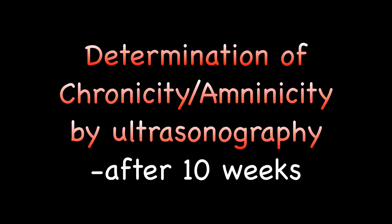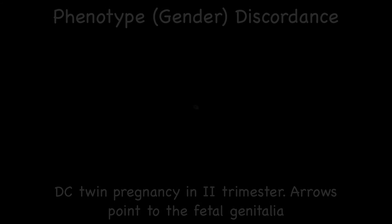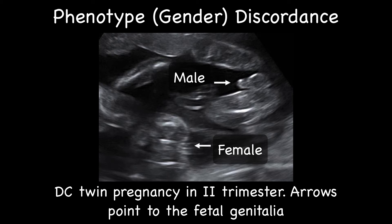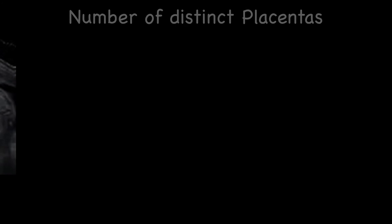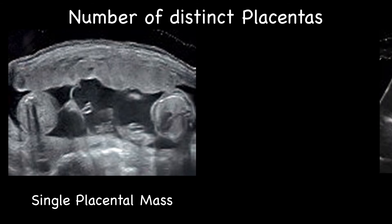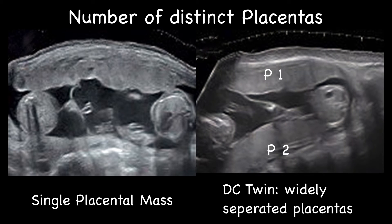After 10 weeks, the following sonographic findings help determine amnionicity and chorionicity. First is gender discordance: while different fetal gender identifies dichorionicity in all but the rarest cases, concordance of gender phenotype does not rule out dichorionicity. The number of distinct placentas seen will also help — a single placental mass likely indicates monochorionicity, whereas the presence of two distinct separate placentas identifies dichorionicity. Careful sonographic examination may help distinguish a single placenta from two placentas in abutment.